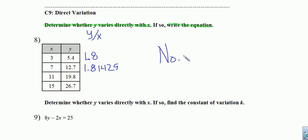These values would have to be the same for it to be a direct variation. So my answer is no. They're not the same. They don't have the same y over x value, which means there's not going to be a constant of variation here.